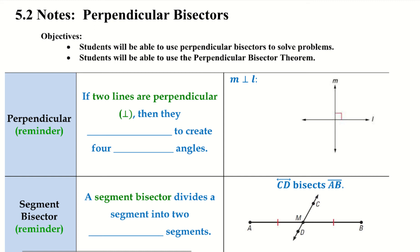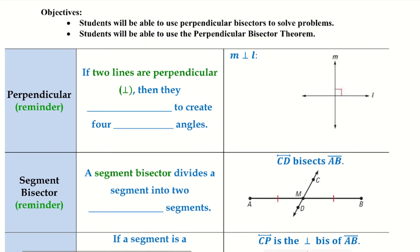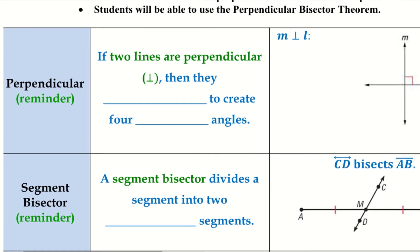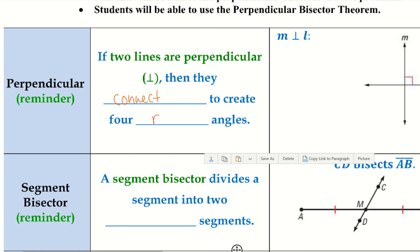The word perpendicular — as a reminder — if two lines are perpendicular, then they connect to form, or create, four right angles. Remember, right angles are 90 degrees.